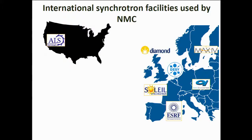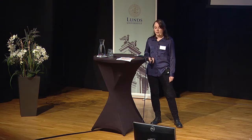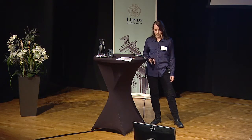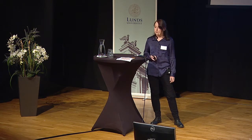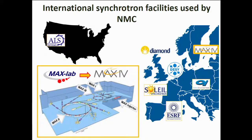There are many international synchrotron facilities all over the world. These are the more common ones used for our research at the NMC. Frequently we go to Soleil or ESRF down in France, Diamond Light Source facility in the UK, and even ALS over in the United States. But we're very lucky here in Lund because we have the MaxLab facility right across the road from the NMC, and in a couple of years we'll be able to use MAX 4 as well. So we have many opportunities to perform these synchrotron-based light experiments.